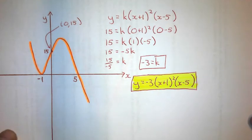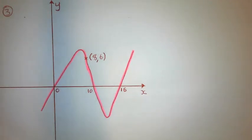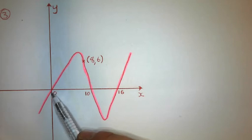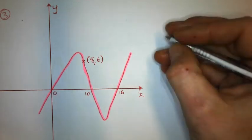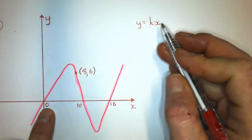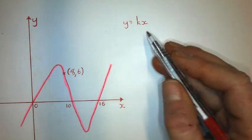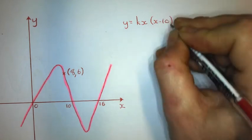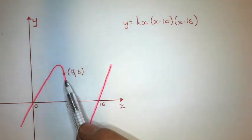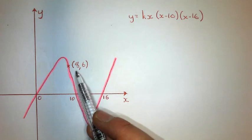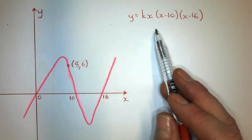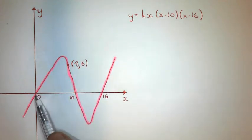Let's try another example. In this one, zero is an x-intercept, so we're going to have x outside the brackets. The general form is y = kx(x − 10)(x − 16). Notice that if we plug in the point (0, 0), everything becomes zero and we won't find anything — so I need one other point on the curve besides the intercepts.